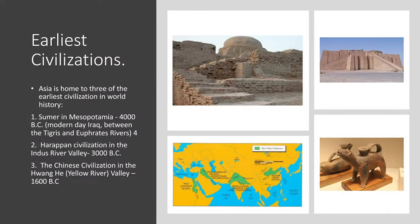One of the last notes today is on the civilizations that developed in Asia. There are three very ancient civilizations that all developed in Asia. The first one is Sumer in Mesopotamia — right here in modern day Iraq, between the Tigris and Euphrates rivers — and it began in 4000 BC. Ancient history students might recognize this as a ziggurat, which was one of the earliest kinds of religious temples built in Sumer.